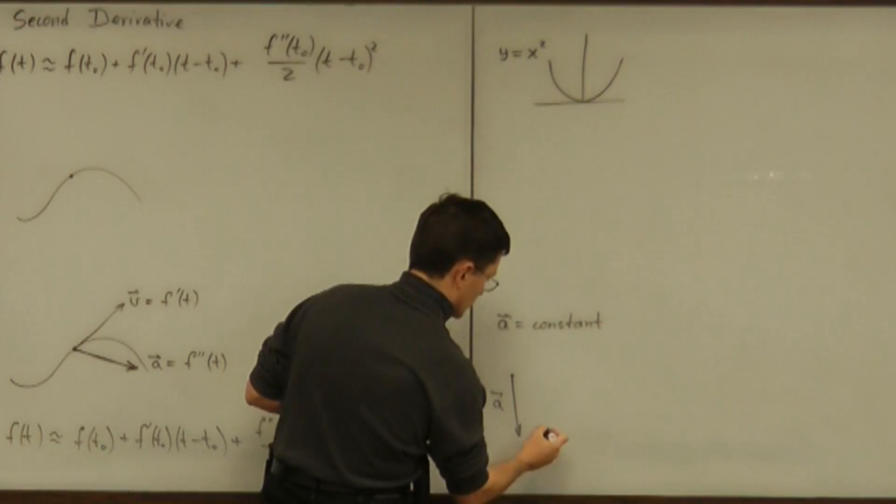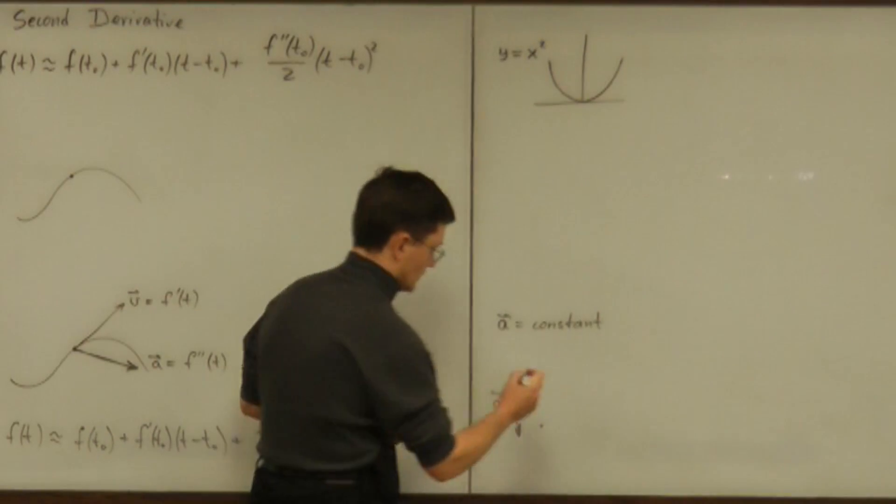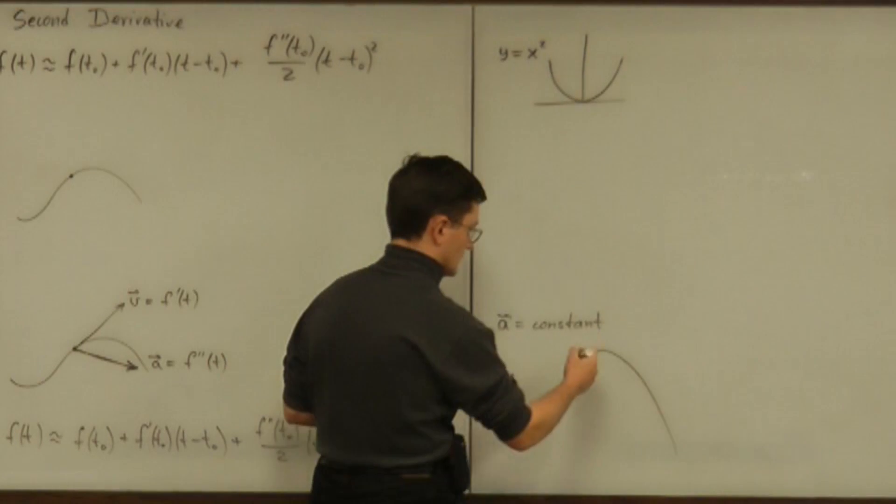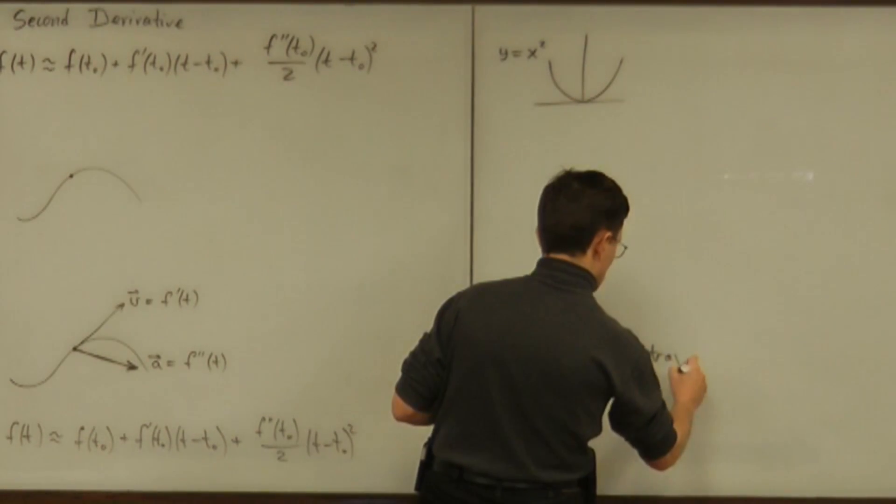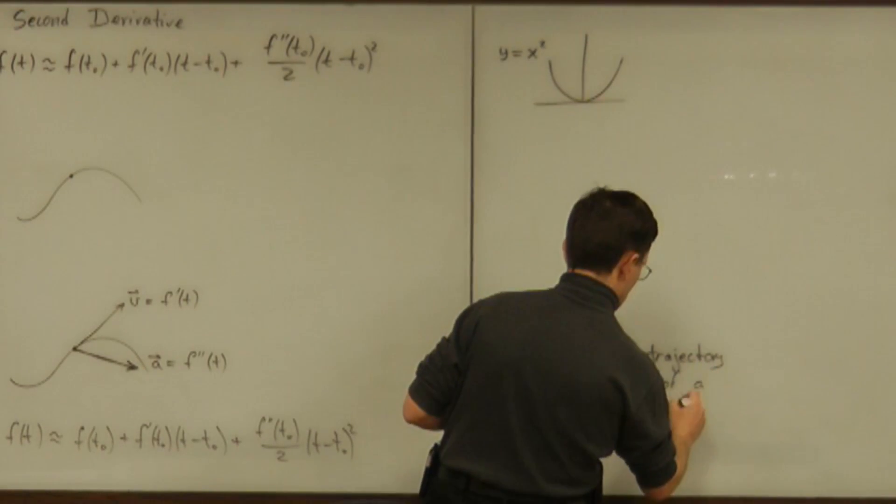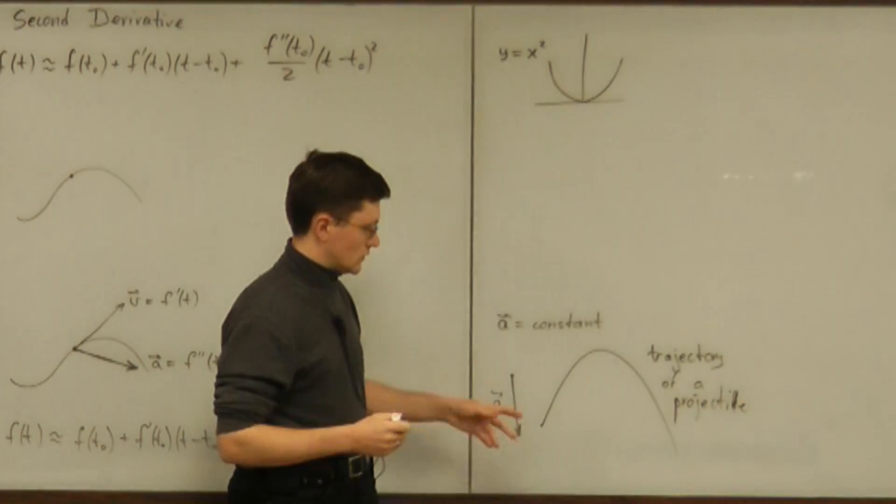And we know that any particle moving under the constant acceleration will have trajectory of parabola. This projectile trajectory is always a parabola.